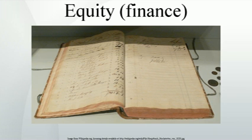Typically equity holders receive voting rights, meaning that they can vote on candidates for the board of directors, shown on a proxy statement received by the investor, as well as certain major transactions, and residual rights, meaning that they share the company's profits, as well as recover some of the company's assets in the event that it folds, although they generally have the lowest priority in recovering their investment. It may also refer to the acquisition of equity ownership participation in a private, unlisted company or a start-up company.